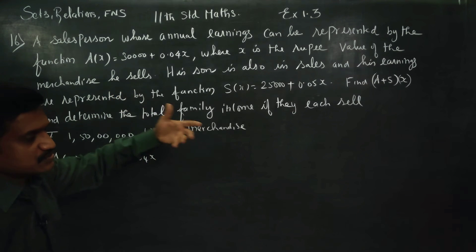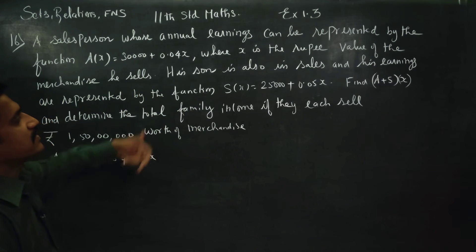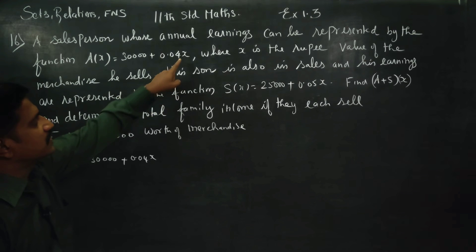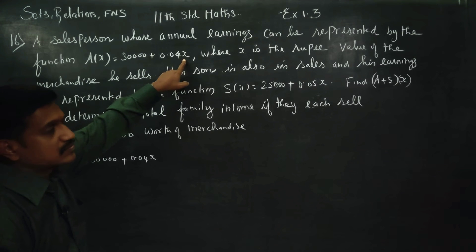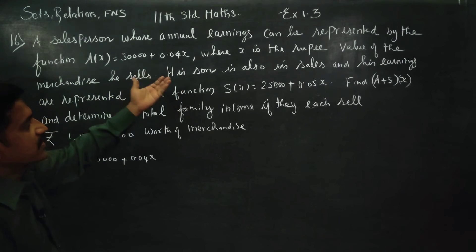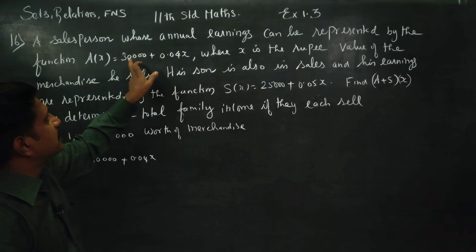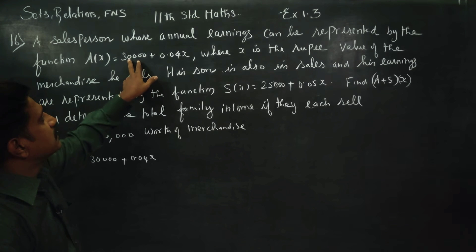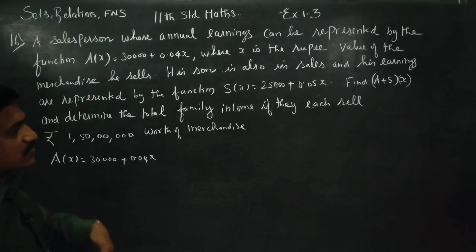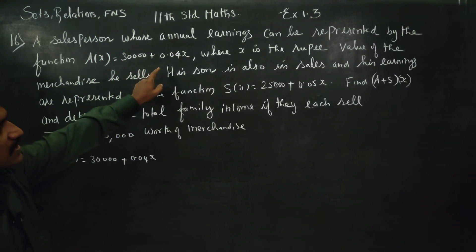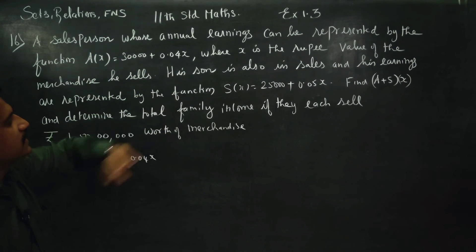For example, in a TV showroom, a salesperson has a fixed income plus a commission. So this is the salesperson's income — that is the result.